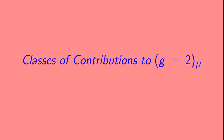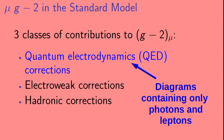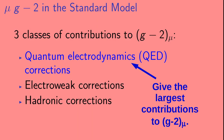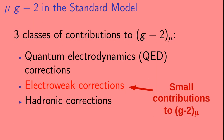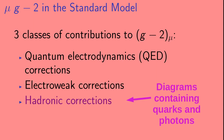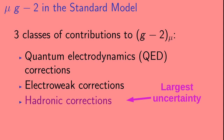So let's look at the classes of contributions to muon G-2. The first class is QED corrections — diagrams containing only photons and leptons — which give the largest contributions. Next are the electroweak corrections, from diagrams containing W, Z, or Higgs bosons, which give very small contributions. Lastly, the hadronic corrections come from diagrams containing quarks (or more accurately, hadrons) and photons. These corrections are fairly small, but they have the largest uncertainty.